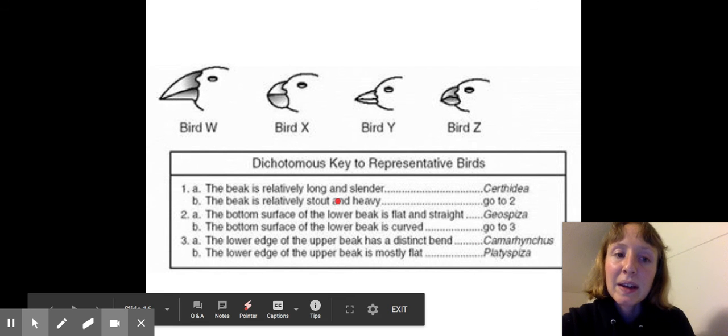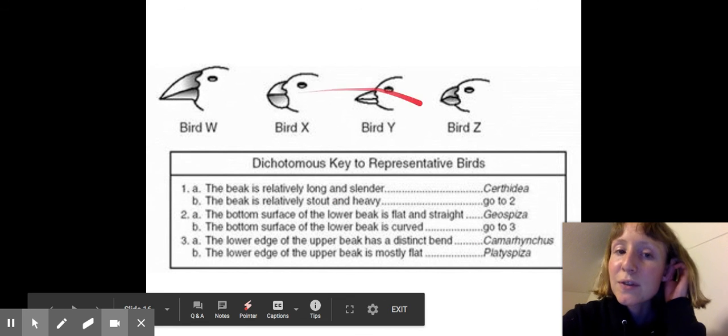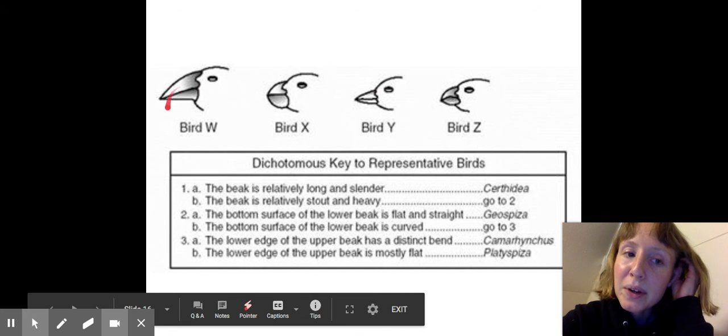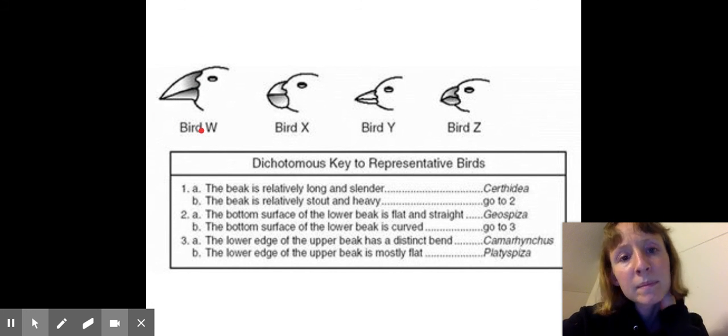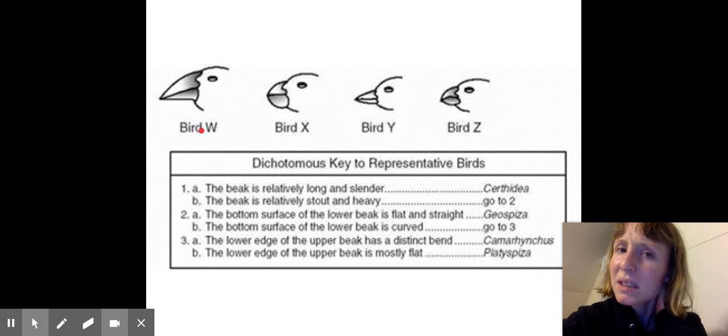Let's look at an example here. We're trying to identify these four birds. Let's start with bird letter W. The beak is relatively long and slender. Yeah, it's long. Let's say Cerithidia. Do you think that's right? Sure, maybe.